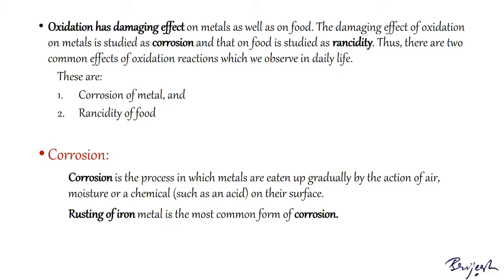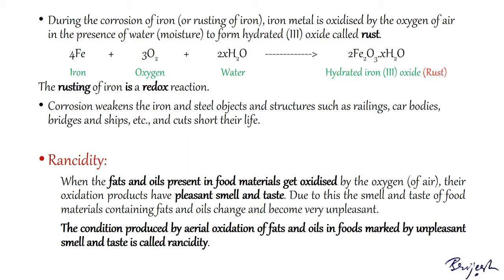Corrosion is a process in which metals are eaten up gradually by the action of air, moisture, or a chemical such as acids on their surface. Corrosion is mainly caused by the oxidation of metal by the oxygen of air. Rusting of iron is the most common form of corrosion. When an iron object is left in damp air for considerable time, it gets covered with a red-brown flaky substance called rust, and during this process iron is oxidized by oxygen in the presence of water to form hydrated iron oxide.